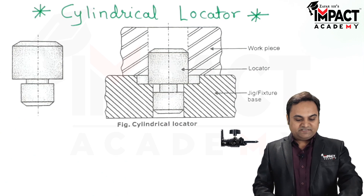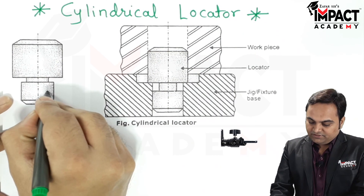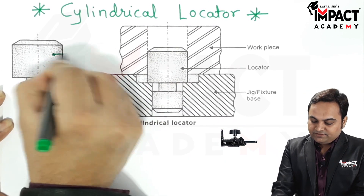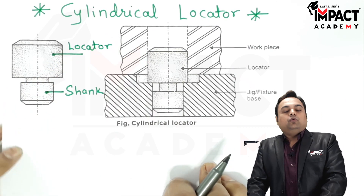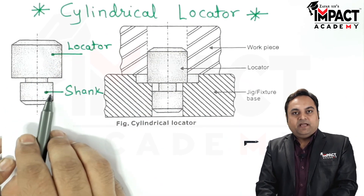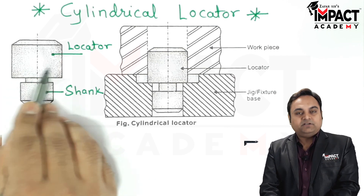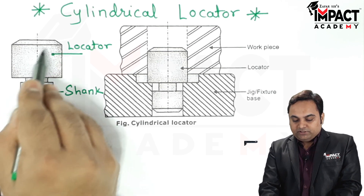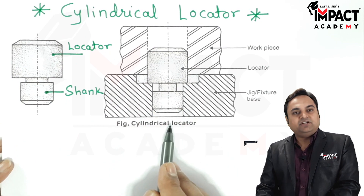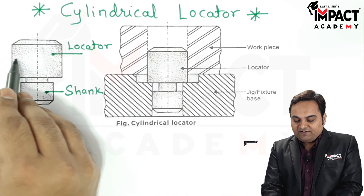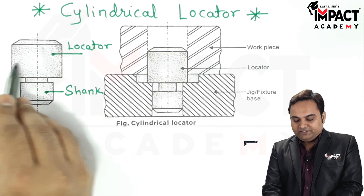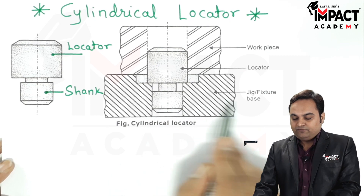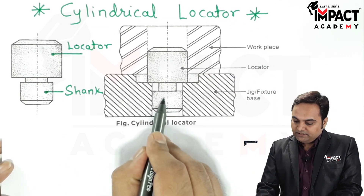The cylindrical locator consists of basically two parts. The bottom portion is called the shank, and the upper portion is the locator. The locator has a greater diameter compared to the shank, because we do not want the locator to go inside the jig or fixture body. The shank portion is fitted into the body of the jig or fixture, as shown in this diagram.